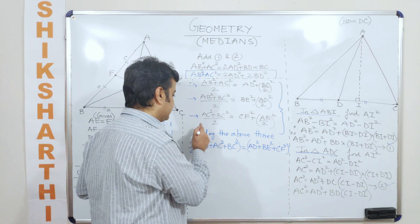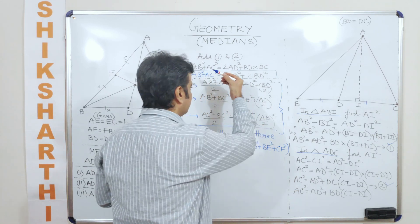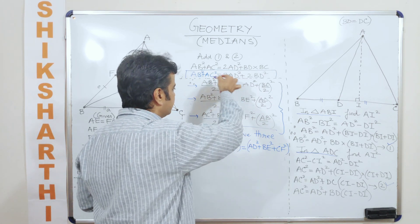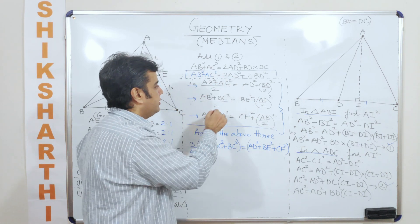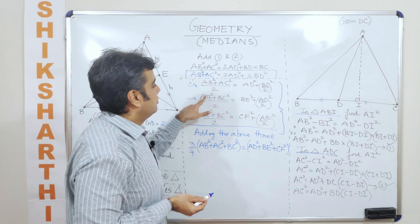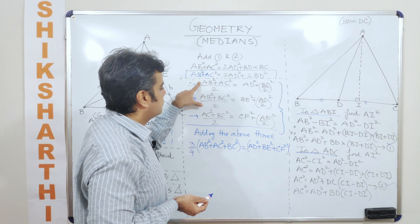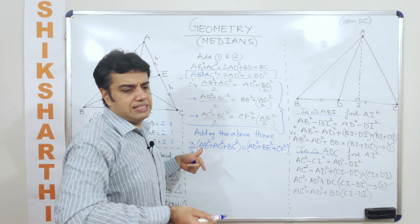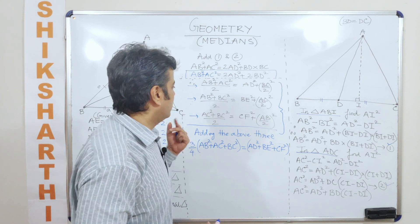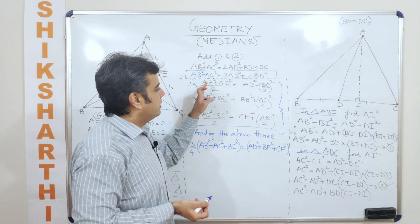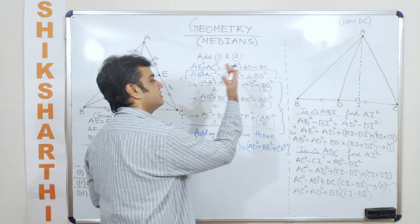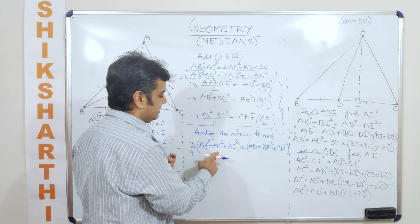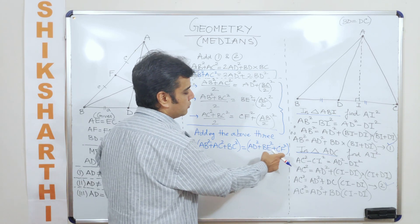Now let us experience something very interesting. Add all three median formulas. When you add the left-hand sides, you get (1/2) of twice AB² plus twice AC² plus twice BC², which simplifies to AB² + BC² + AC². Subtracting one-fourth of the sum, 1 minus 1/4 gives 3/4. So: (3/4)(AB² + AC² + BC²) = AD² + BE² + CF².